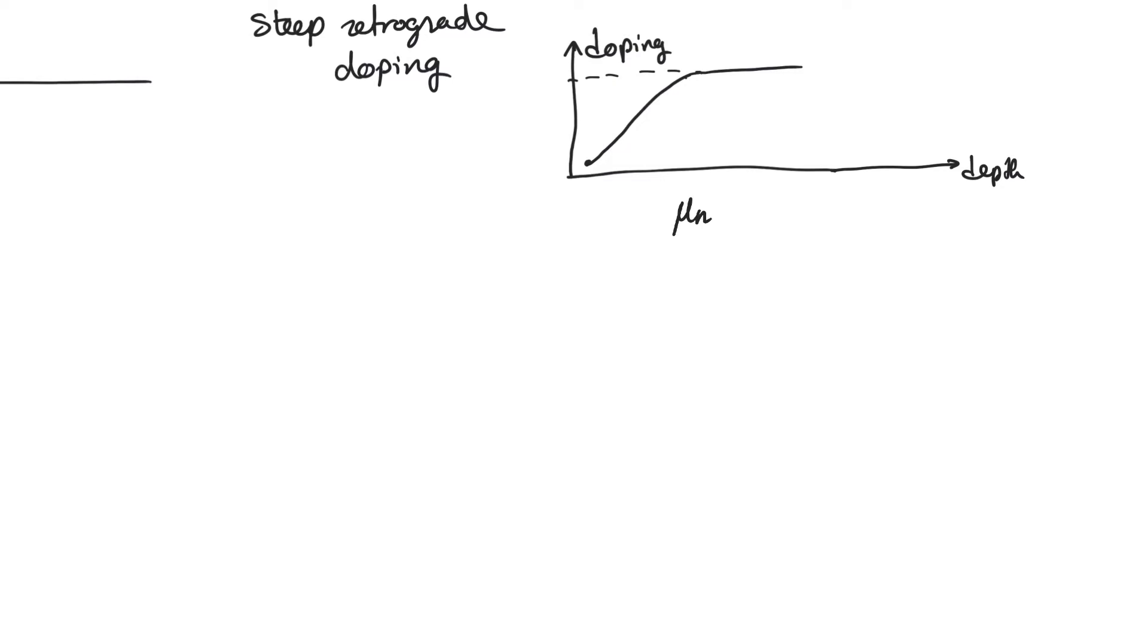Higher doping means more irregularities in the crystal. These irregularities will cause the electron to collide more often. If it collides more often, it will come to a complete stop more often, and therefore it will observe a lower average velocity. And so mobility is a strong function of doping. The higher the doping, the lower the mobility.